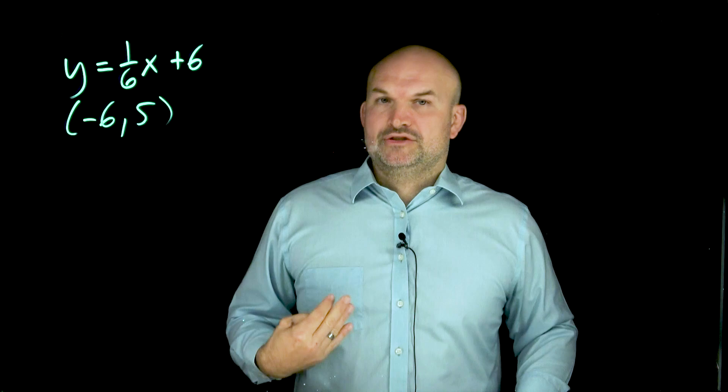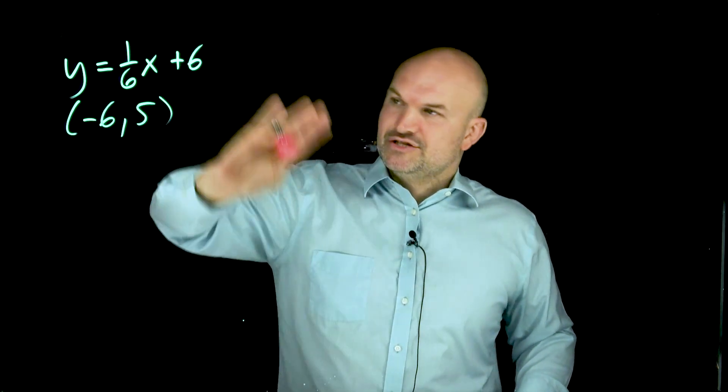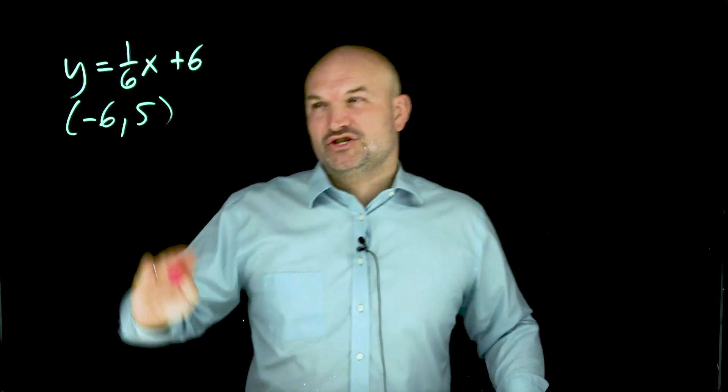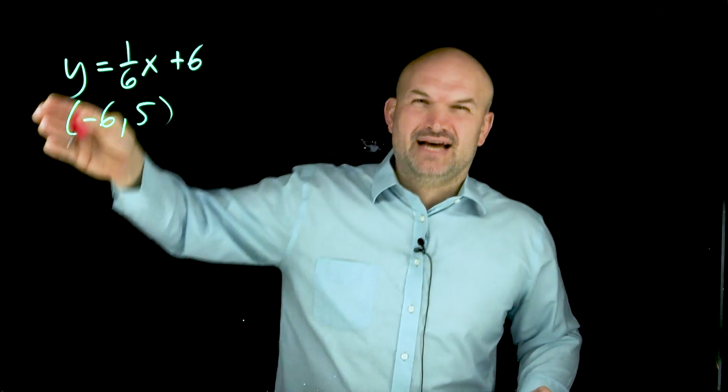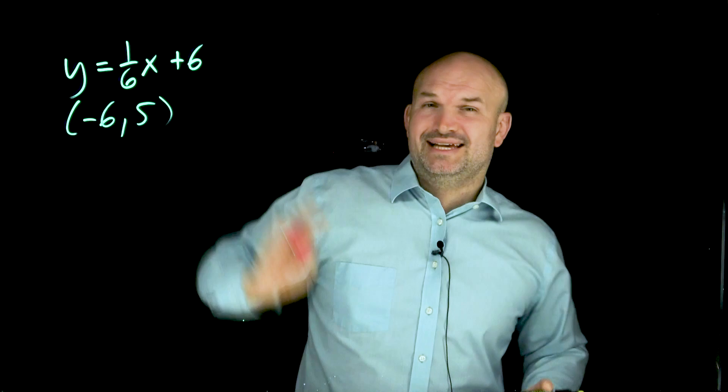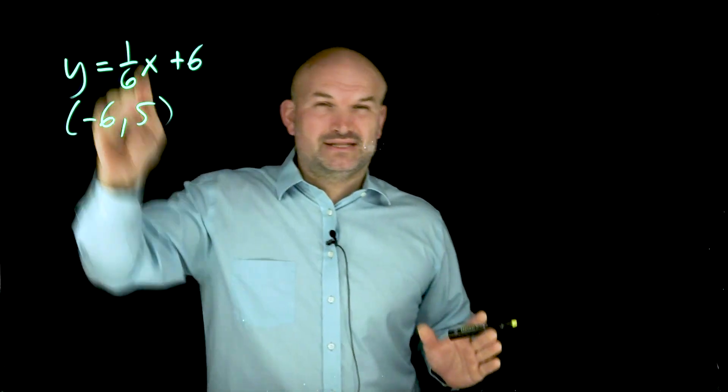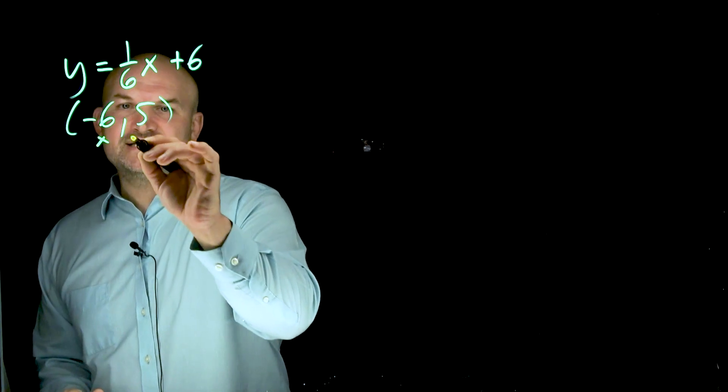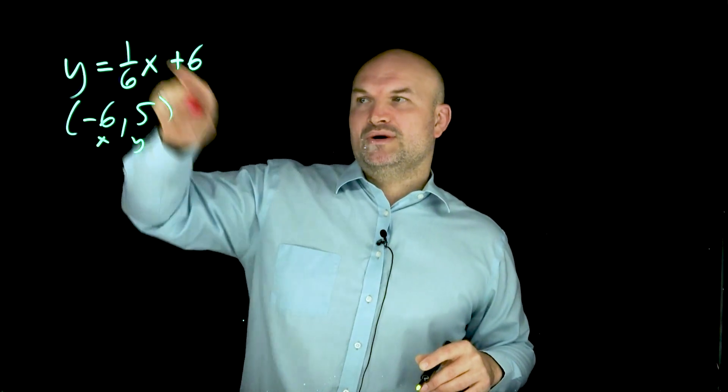The first thing I always want to do, especially on an equation like this, which I should have done first, is double-check to make sure that this point does not lie on the line. Because to identify the distance from this point to the line is a little bit of work. So what I should have done first is check: this is an X and Y coordinate.